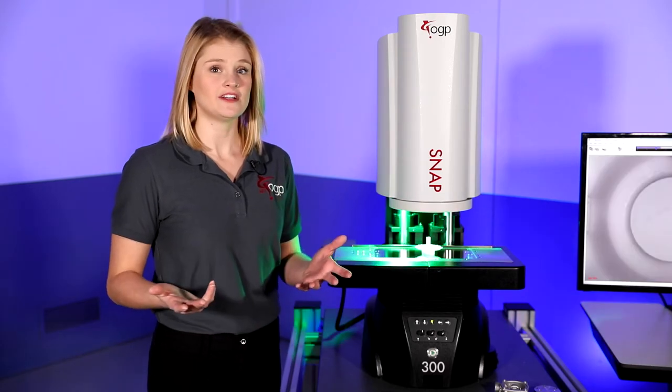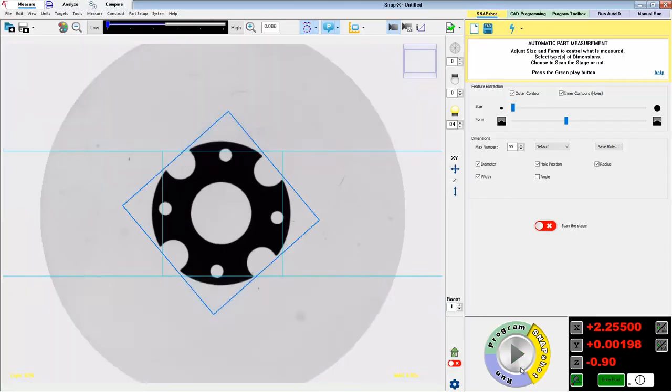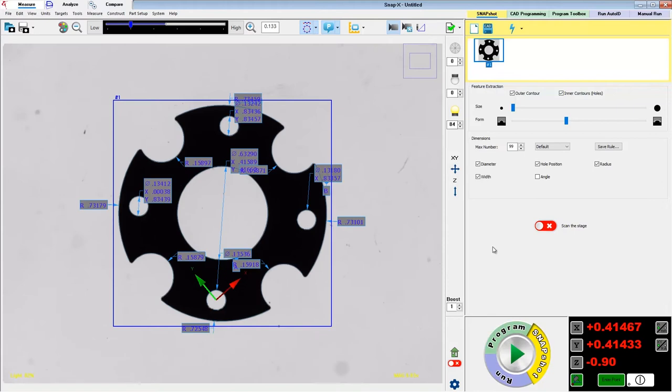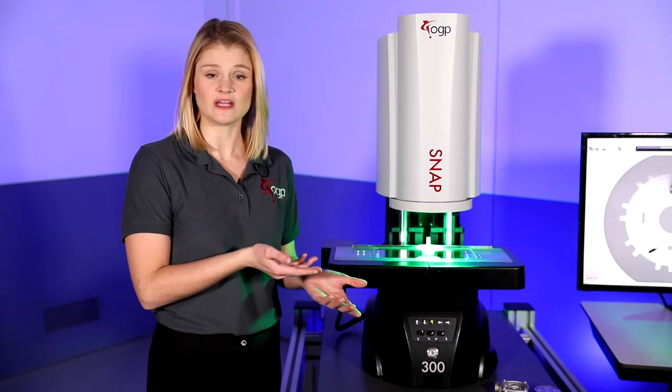For parts not yet registered, SNAP feature extracts all discernible features and displays results right on the video image. They can be viewed with no further action or the features can be turned into measured steps for our program.